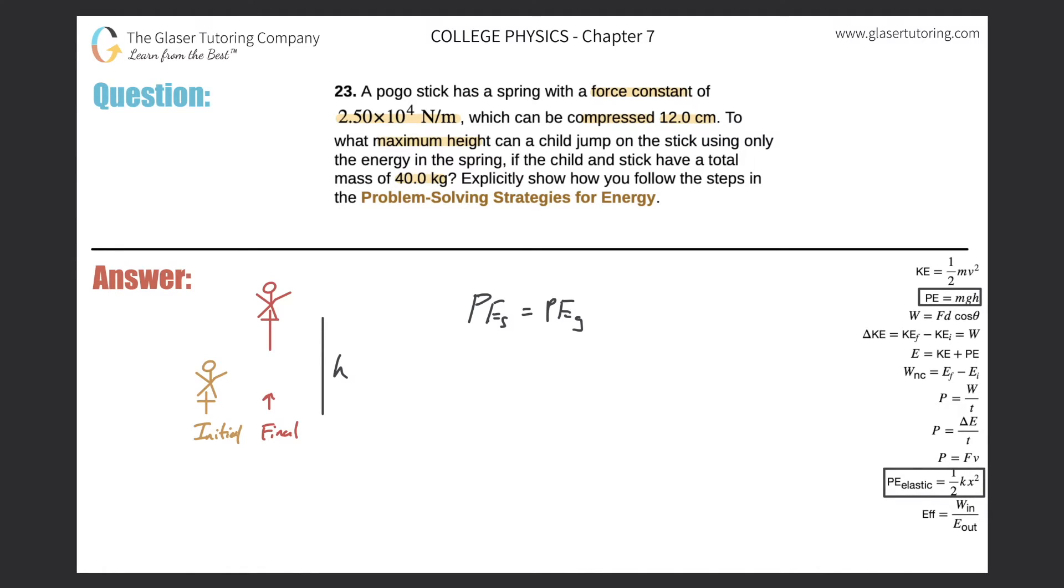Now I'm going to expand these two terms. For the spring, it's one half times the force constant multiplied by the compression squared equals then mgh. And what am I looking for? Well, I'm looking for the height here. So how do I solve for height? Simply divide out mg from both sides. And here's our formula: the height will equal one half times the force constant times the compression squared all over mg.